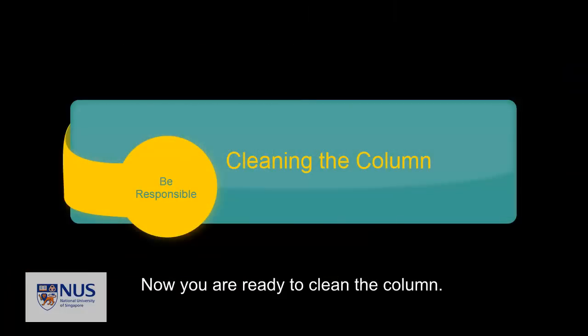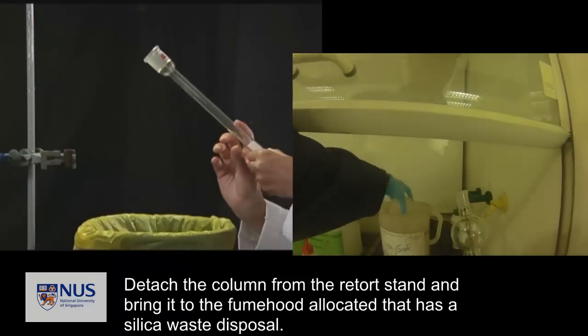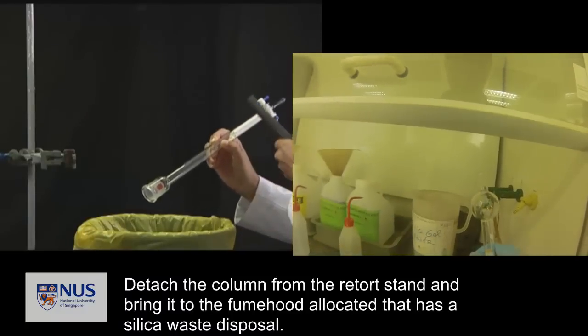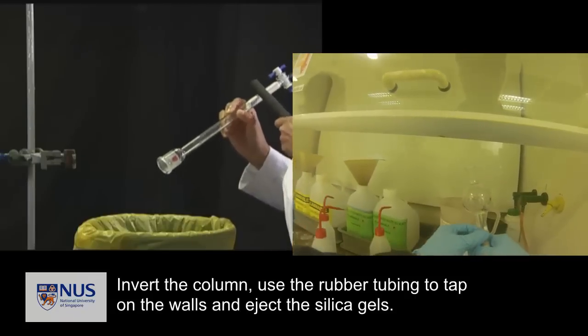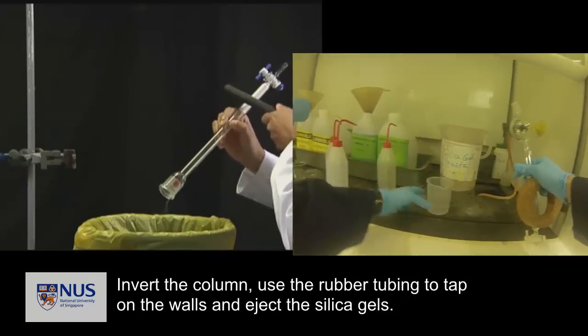Now, you are ready to clean the column. Detach the column from the retort stand and bring it to the fume hood allocated that has a silica waste disposal.